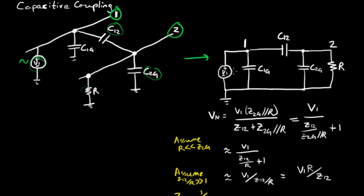So we have V1 which shows up here, C1G which is here, C12 the coupling capacitance which is here, C2G which is here, and then there's the resistor.